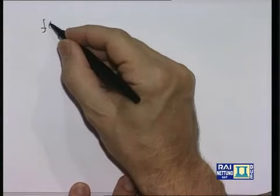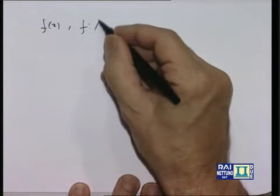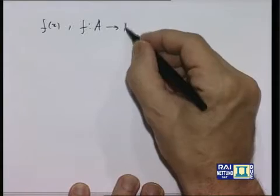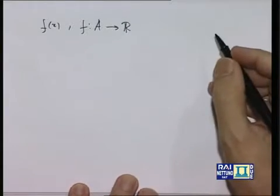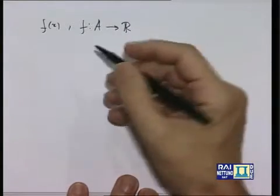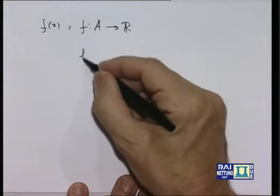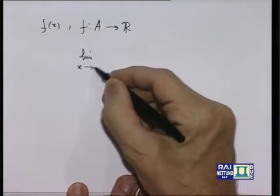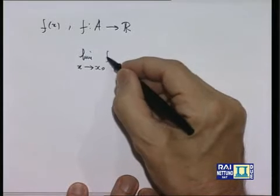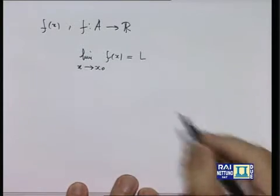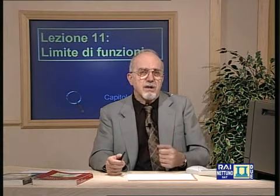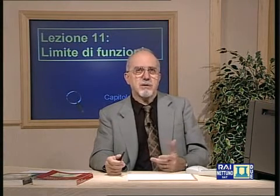Abbiamo una funzione f definita sull'insieme A della retta reale, a valori reali, e vogliamo dare significato alla notazione del limite per x che tende a un certo x₀ di f(x). Questo numero L deve rappresentare il valore a cui i valori della funzione si avvicinano quanto più x è prossimo a x₀.